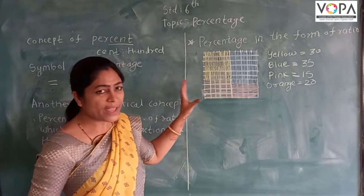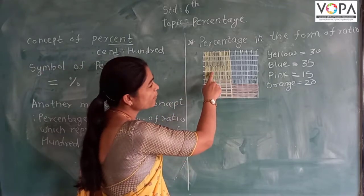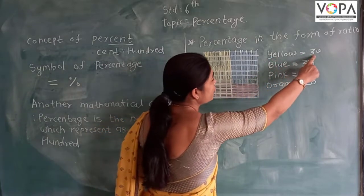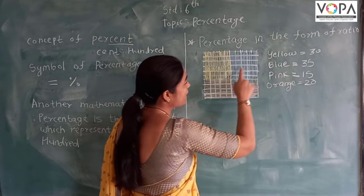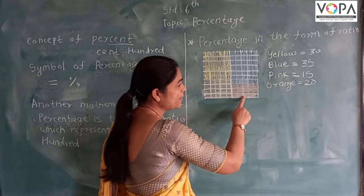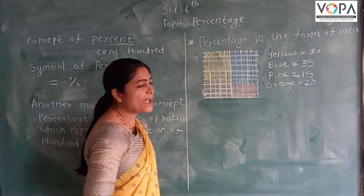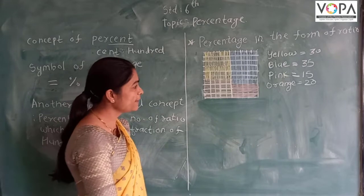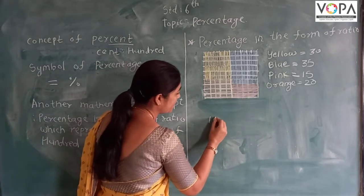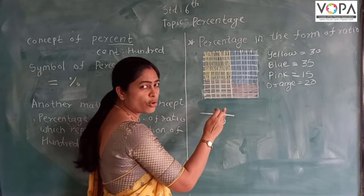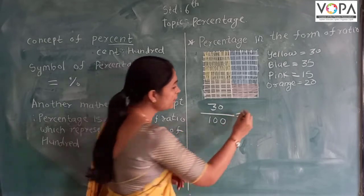In this square, there are some squares in yellow color. There are 30 squares in yellow color, so we can write it as 30 percent.